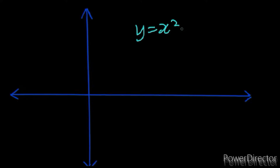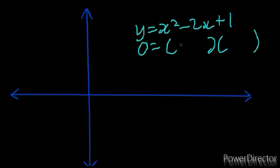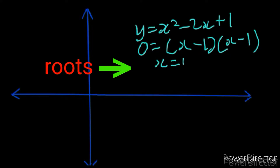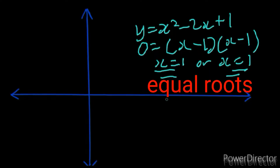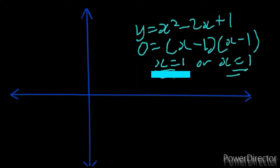Let me show you an example with this particular graph. Let's say we have y = x² - 2x + 1. We know that at the x-intercept, y = 0. If we make y = 0, we factorize to get two brackets: (x - 1)(x - 1). So our roots are x = 1 or x = 1. Notice that we have the same answer appearing twice — so these roots are equal. Whenever you get one answer appearing twice, your roots are equal, meaning there is only one x-intercept.